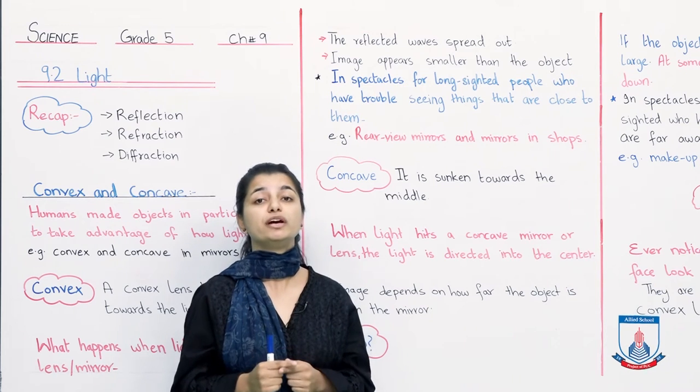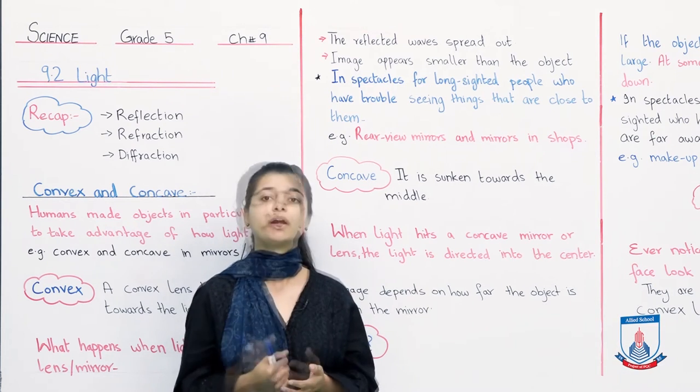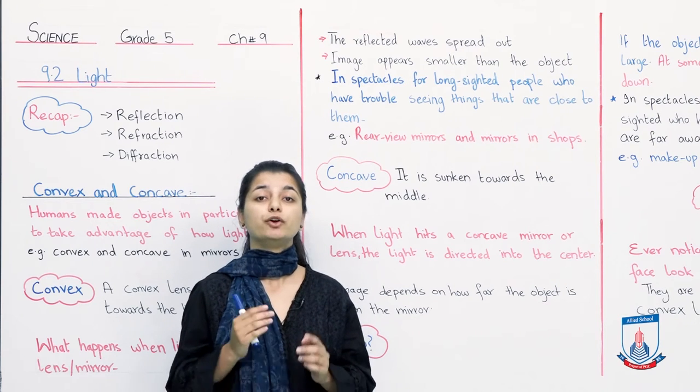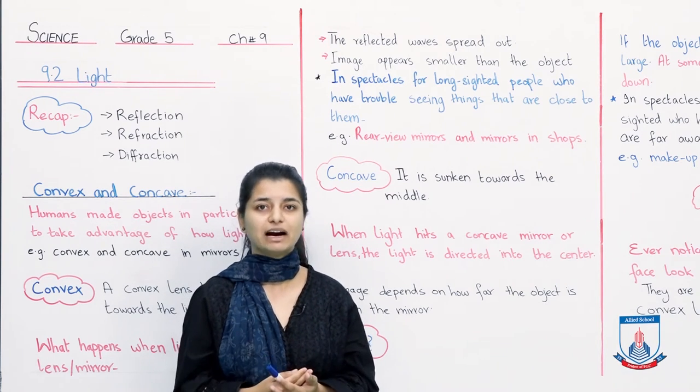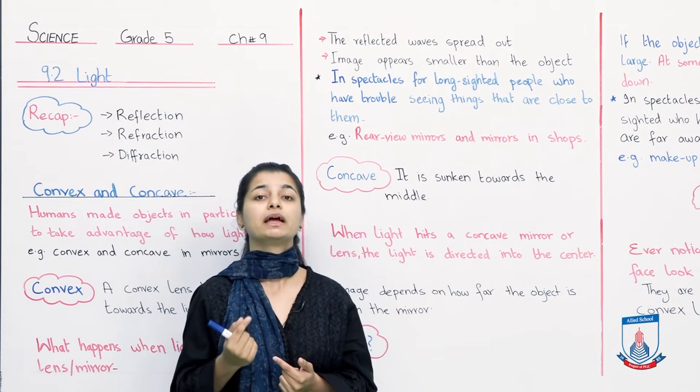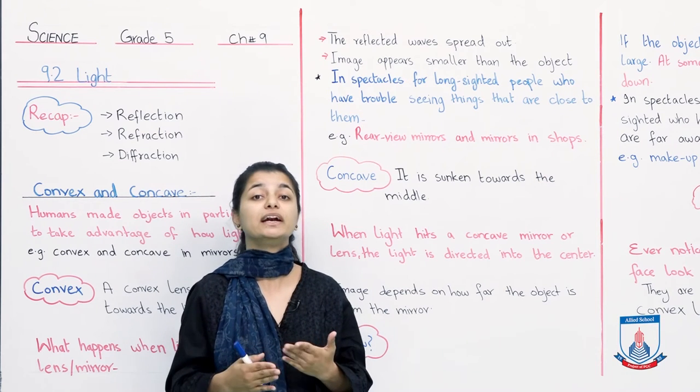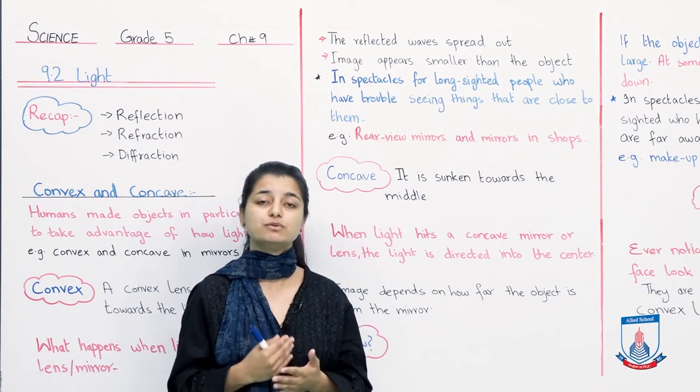But that is not the only use for a convex lens. There are also many ways, such as rear view mirrors. Which rear view mirrors are, you must know because you have traveled in the car. The rear view mirrors are attached to the car. So that is a common use in regular life which uses convex lens.